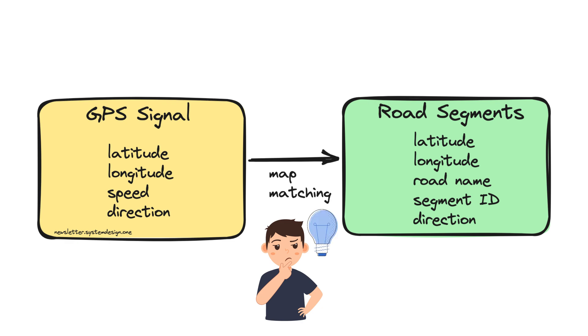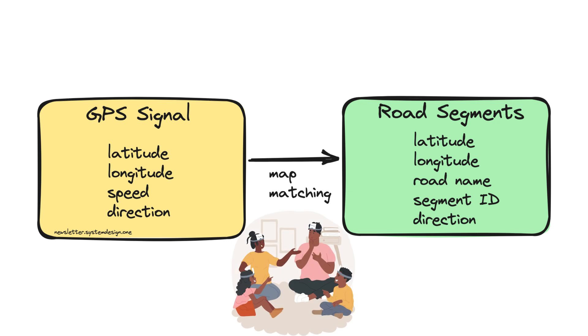Besides, they use the Viterbi algorithm to find the most probable road segments. It's a dynamic programming approach. Imagine the Viterbi algorithm as a person who figures out the correct story, even if some words were spelled wrong. They do that by looking at the nearby words and fixing the mistakes, so that the story makes more sense.